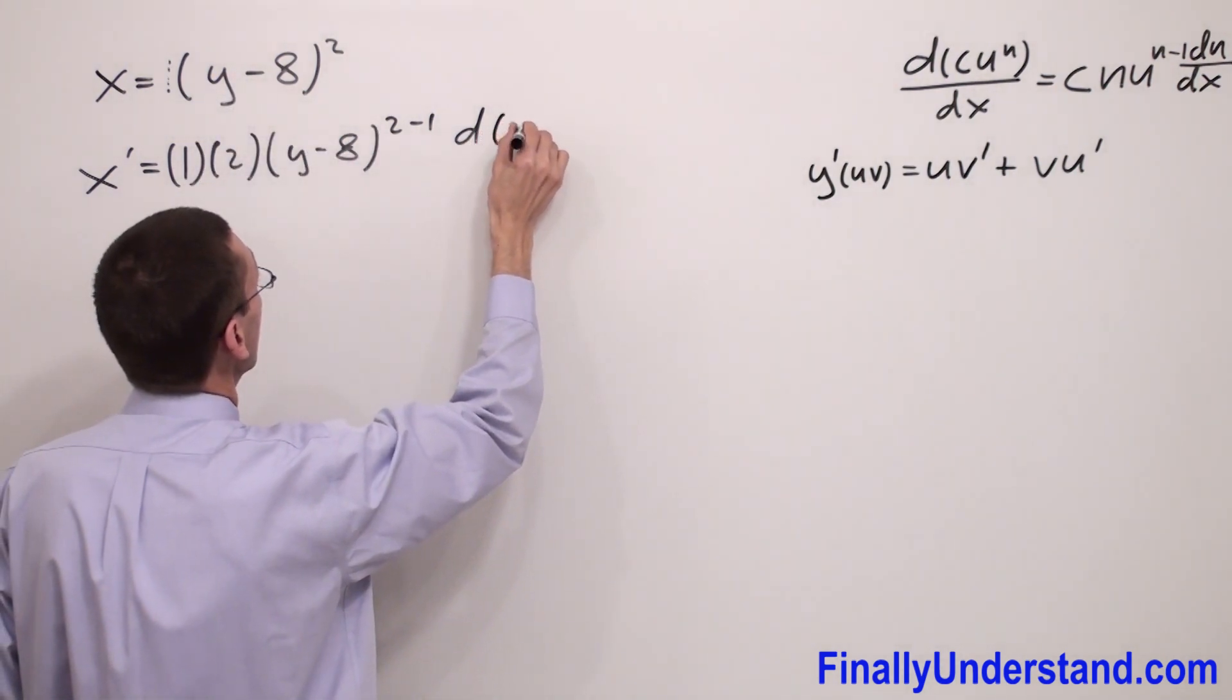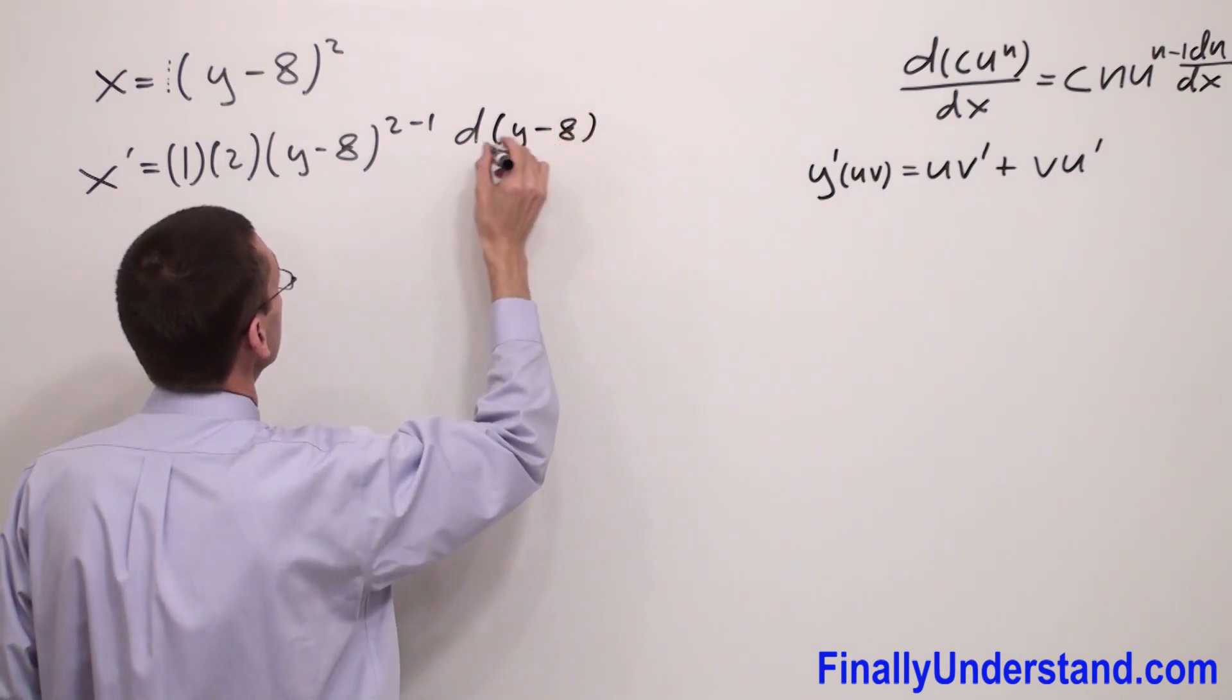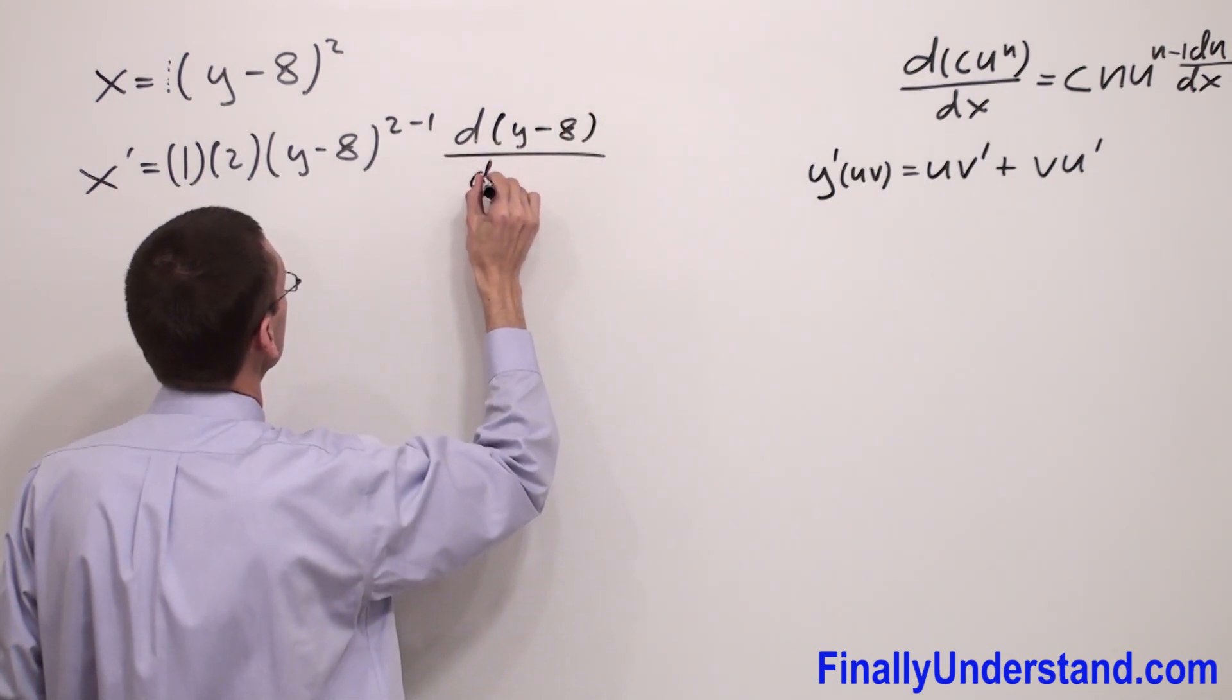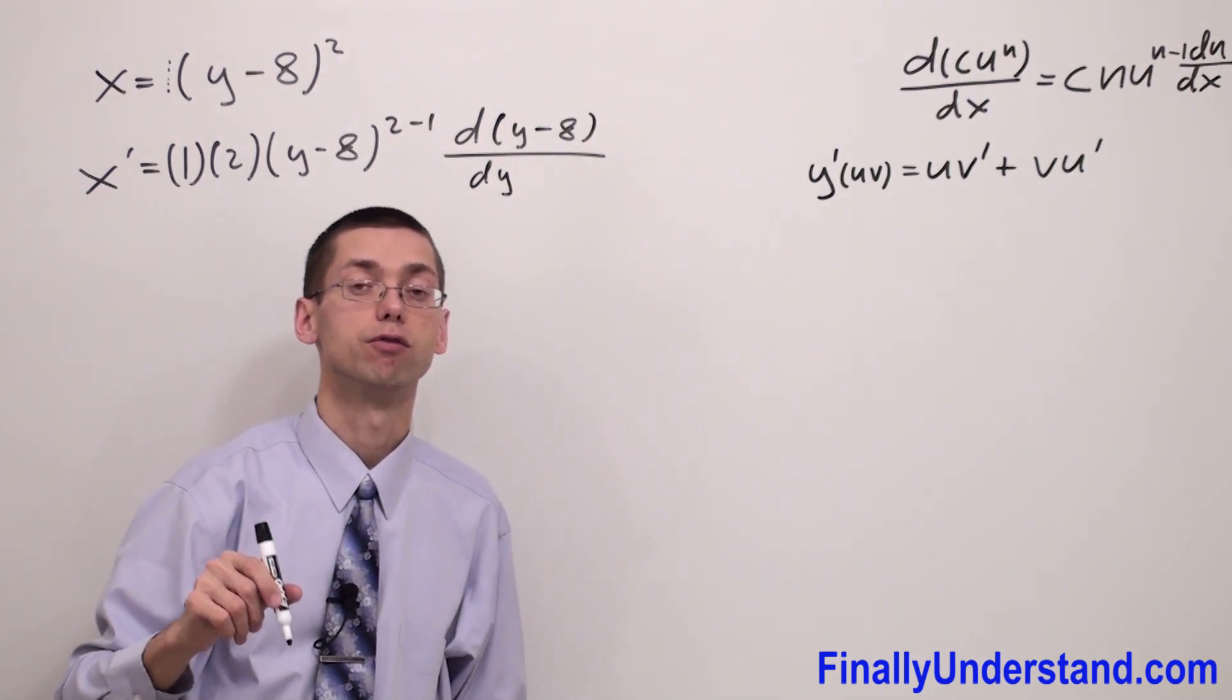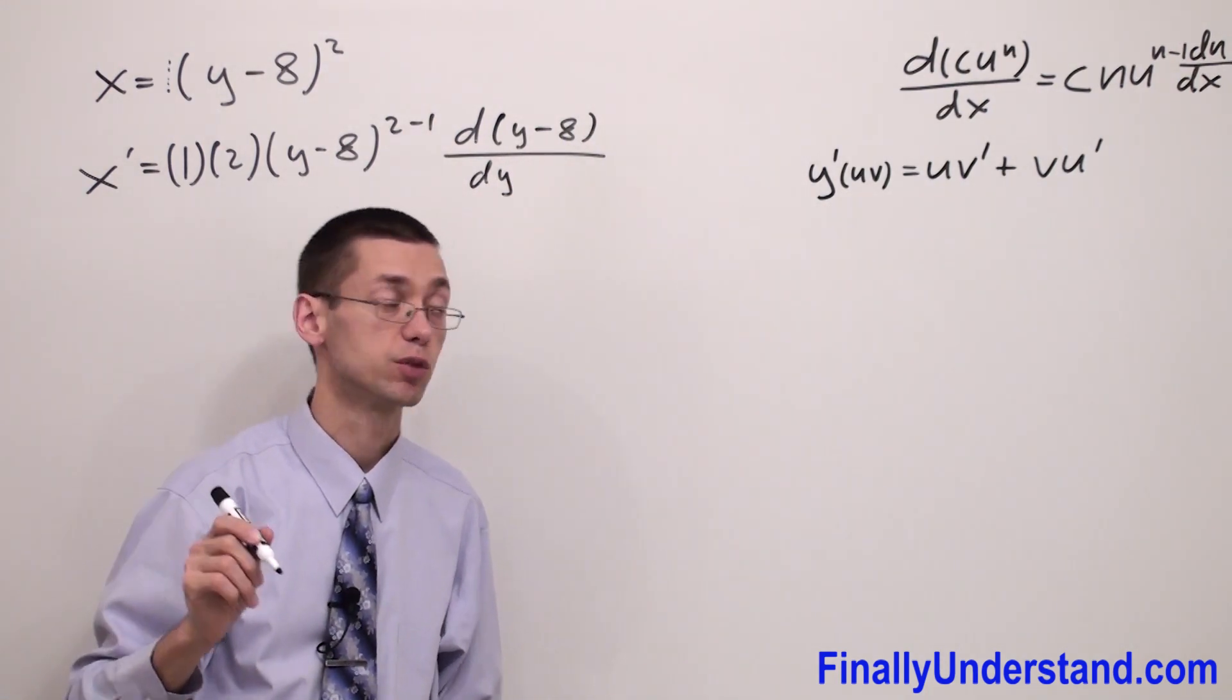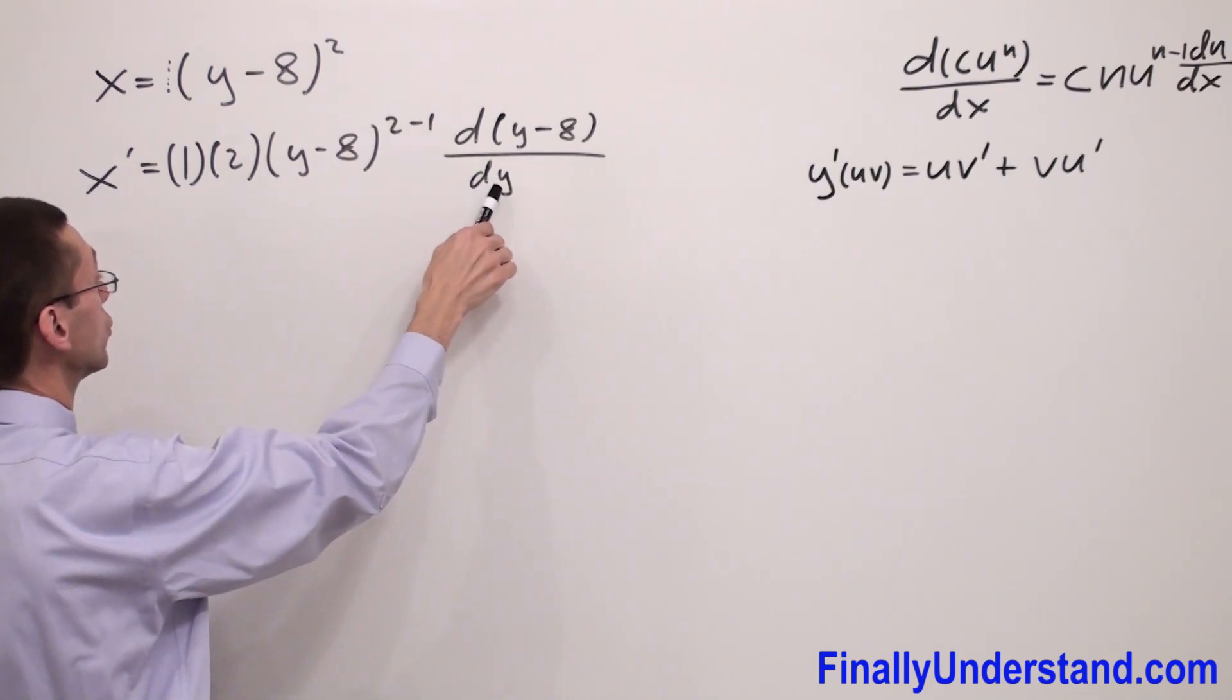So I have y minus 8 with respect to y, because we are supposed to find the derivative of the function with respect to y. That's why I wrote y over here.